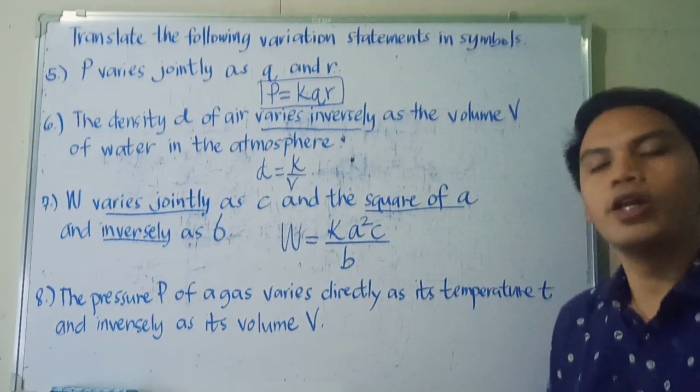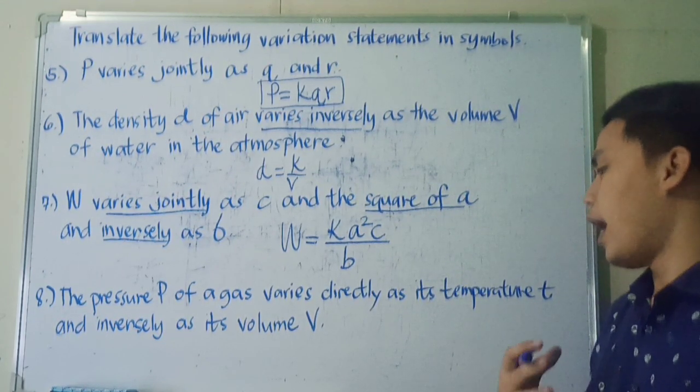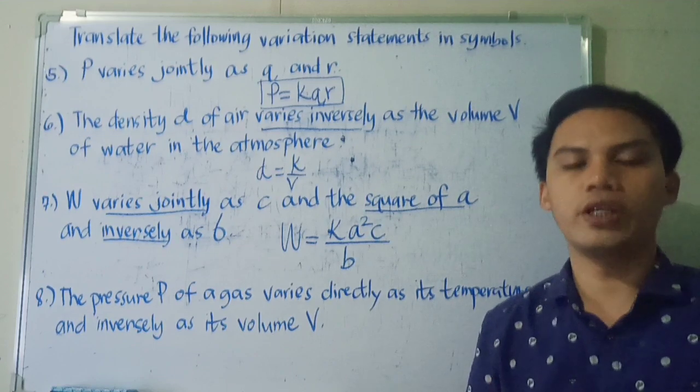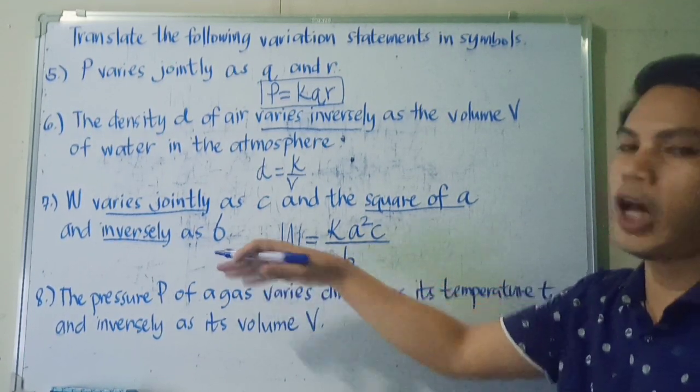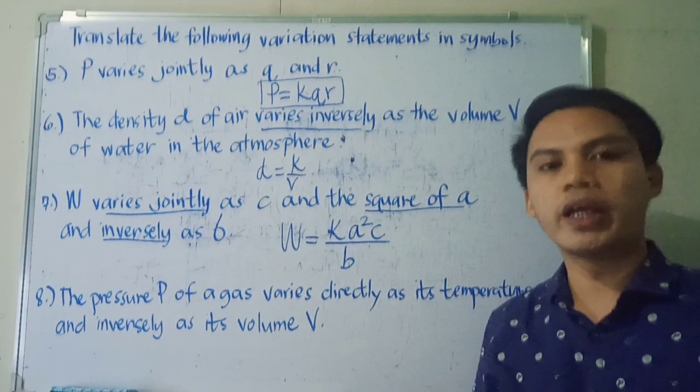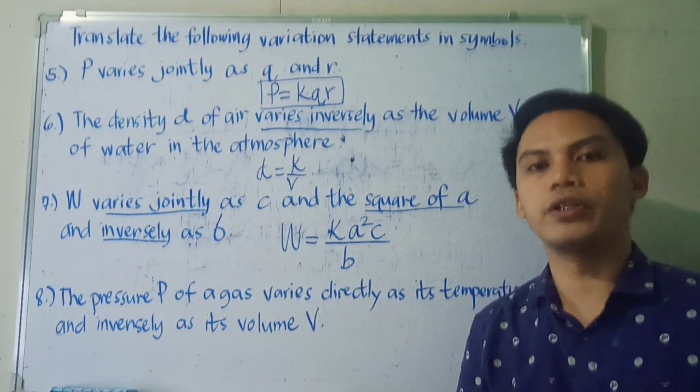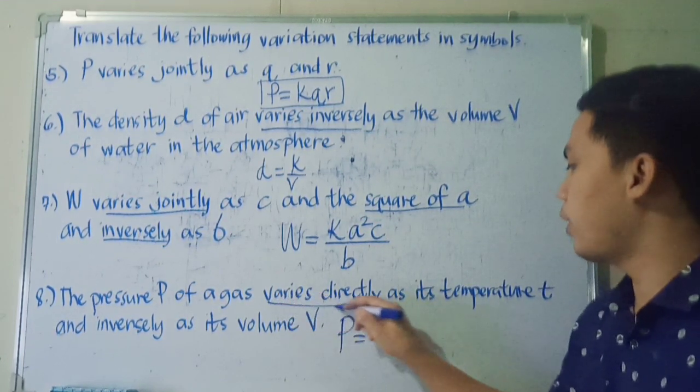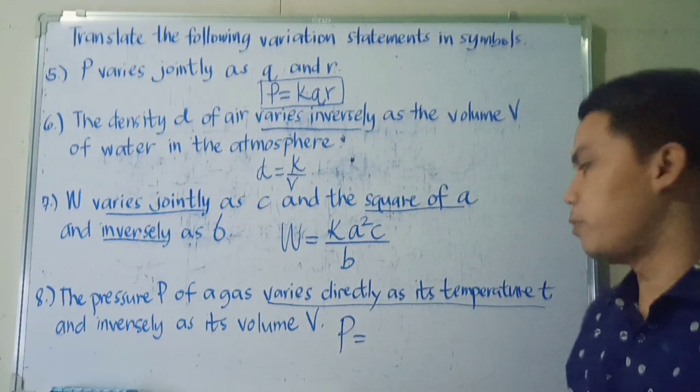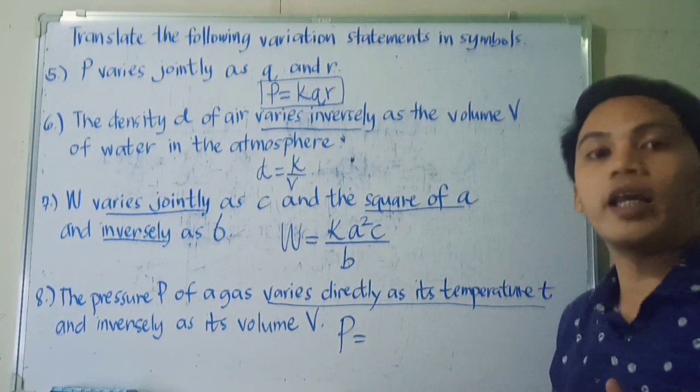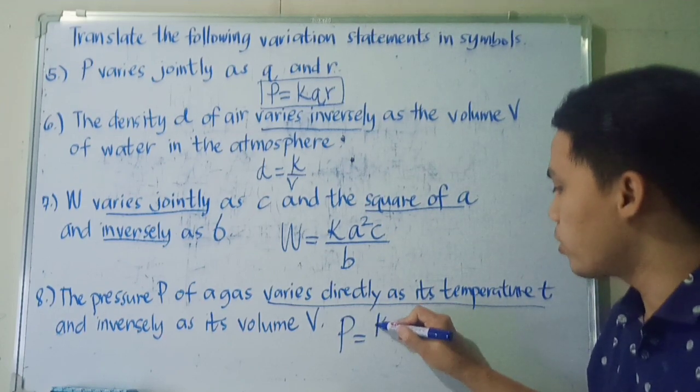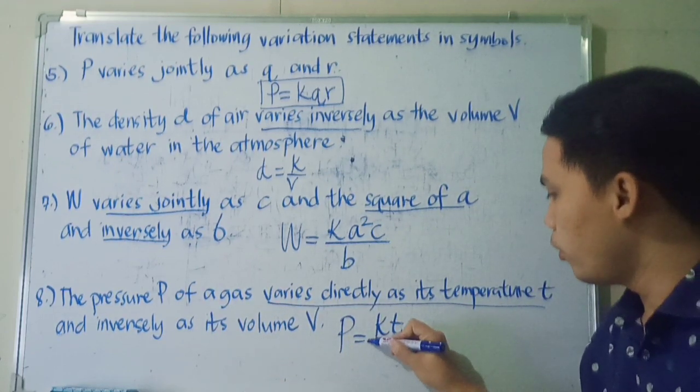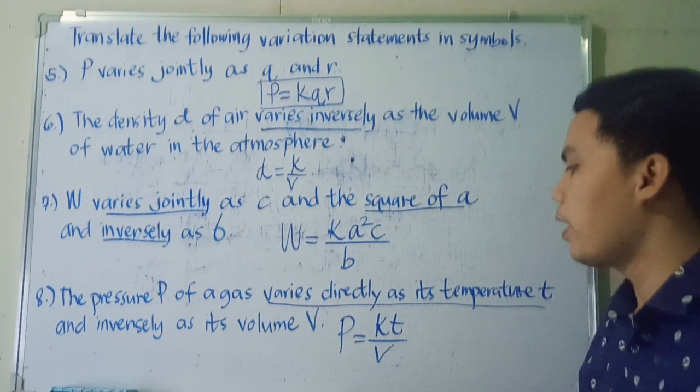Last example. The pressure P of a gas varies directly as its temperature T and inversely as its volume V. So it's the same, it's like number 7, a combined variation. So we mixed direct variation and inverse. So we're going to write now P, varies directly as its temperature T. So that means T will be placed in the numerator. So we have the constant K then T. And inversely as its volume V. So our variable V will be placed in the denominator.